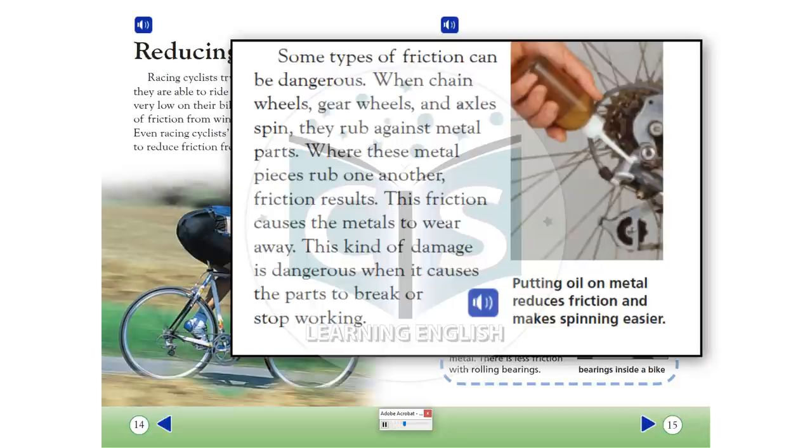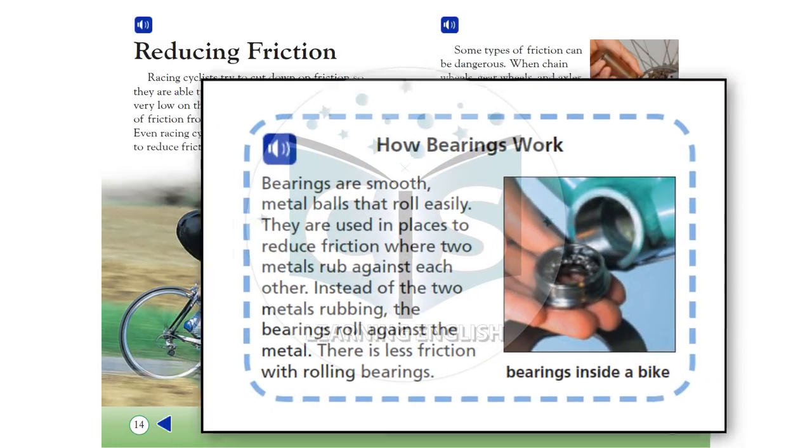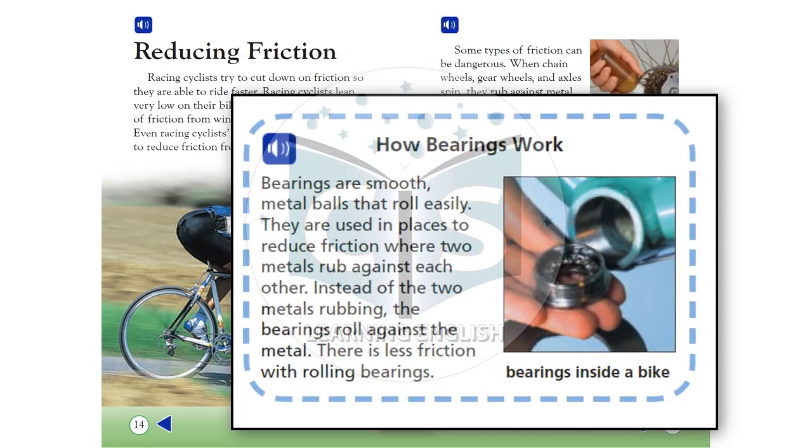Putting oil on metal reduces friction and makes spinning easier. How bearings work: Bearings are smooth metal balls that roll easily. They are used in places to reduce friction where two metals rub against each other. Instead of the two metals rubbing, the bearings roll against the metal. There is less friction with rolling bearings.